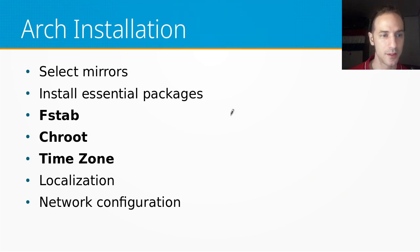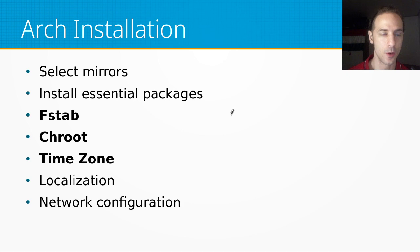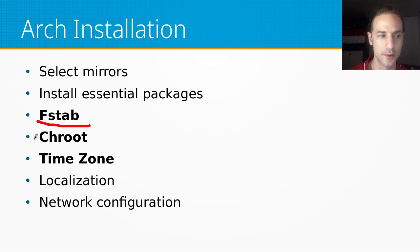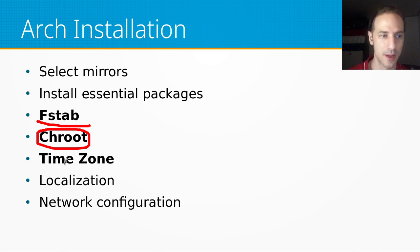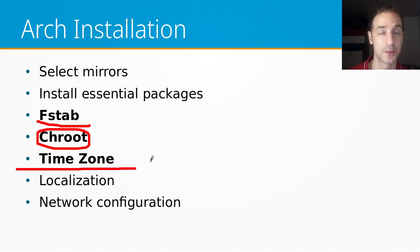After we installed the essential packages like the kernel, a text editor, or something we want on our system, we can start configuring the basic things. We'll look at the fstab file, use the chroot command to get into our new system, and set up timezone, localization, network configuration, and things like that. In today's video I'm just going to take you up until this point, so you'll have to watch the upcoming videos for the other topics.